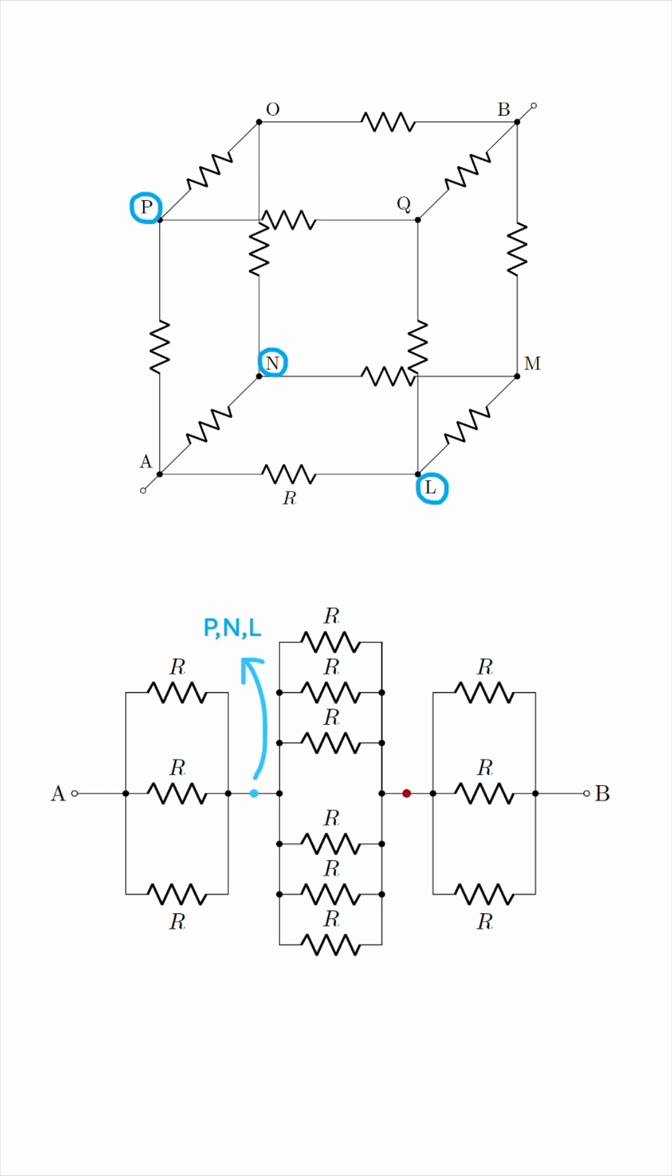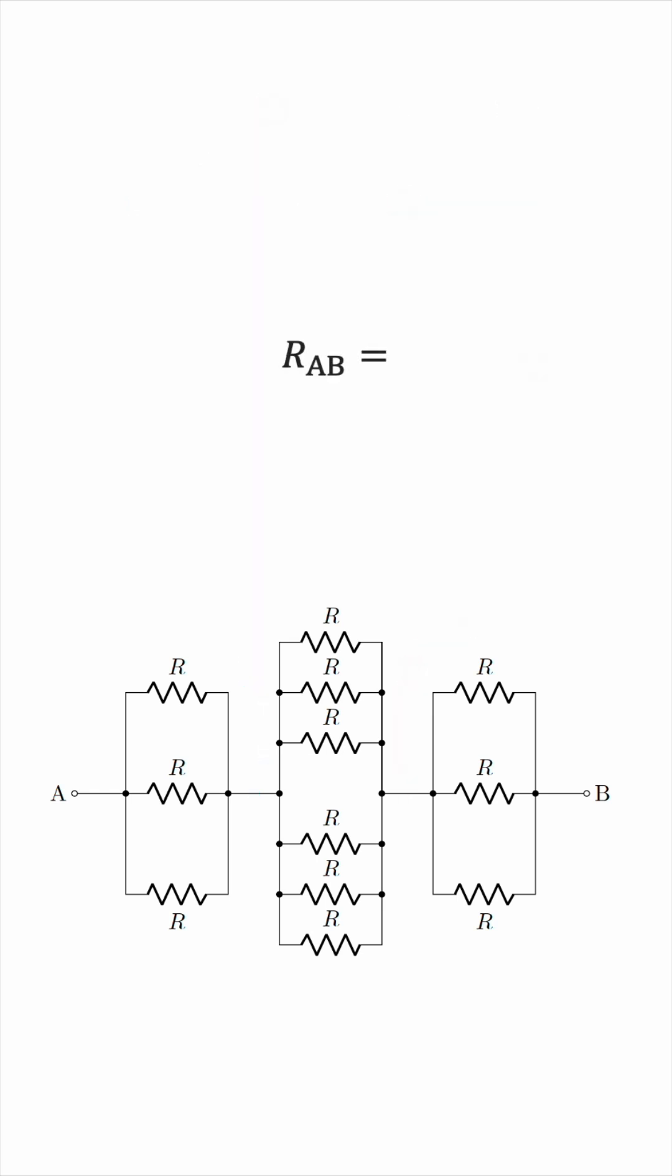Likewise, this node can be O, Q, or M. So knowing the equivalence in terms of potential, in terms of voltage, allowed us to redraw the circuit in the following way. And now combining them becomes an easy problem.